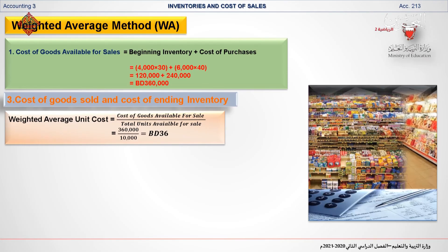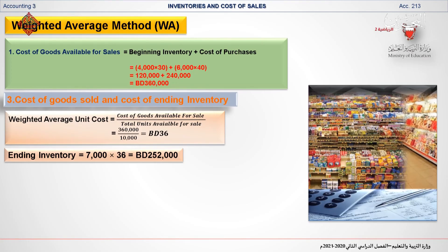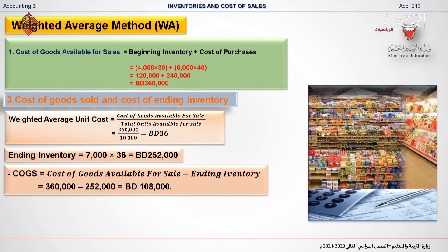To calculate the cost of ending inventory, multiply the number of ending inventory units by the weighted average unit cost: 7,000 multiplied by 36 BD equals 252,000 BD. The cost of goods sold is calculated as cost of goods available for sale minus cost of ending inventory: 360,000 minus 252,000 equals 108,000 BD.